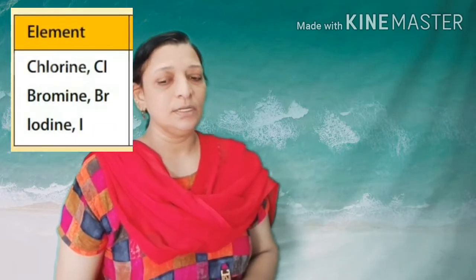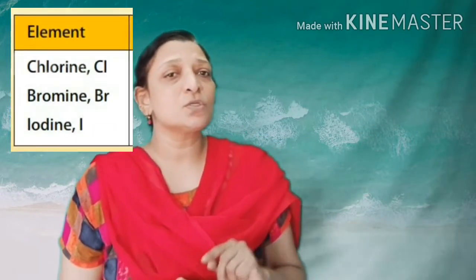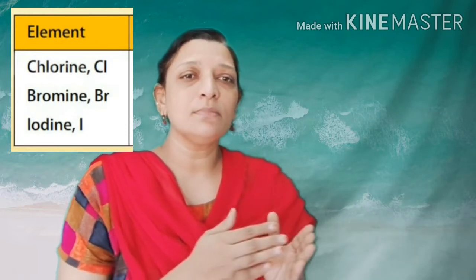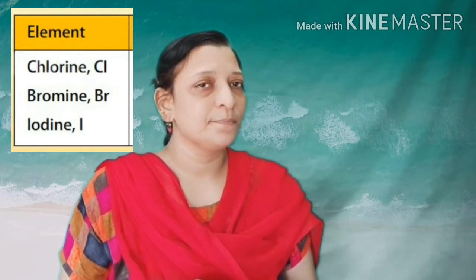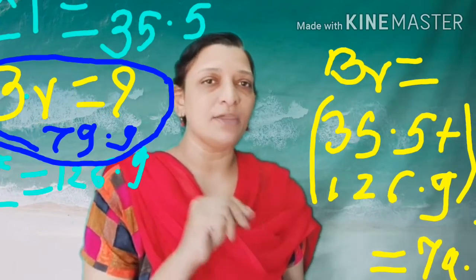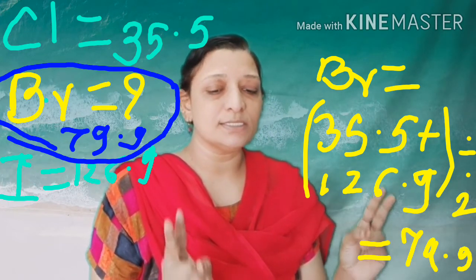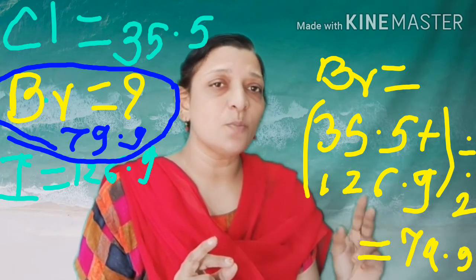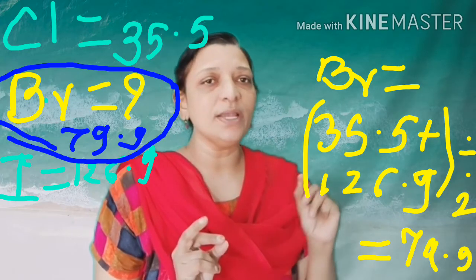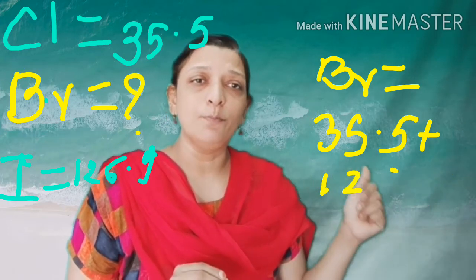The third example of the triad is chlorine, bromine, and iodine — all non-metals with similar chemical characteristics arranged in increasing atomic number. According to Dobereiner's Triad rule, the atomic mass of chlorine is 35.5 and that of iodine is 126.9. The mean, (35.5 + 126.9) / 2 = 79.9, which is the atomic mass of bromine, the middle element. This is the third Dobereiner's Triad.